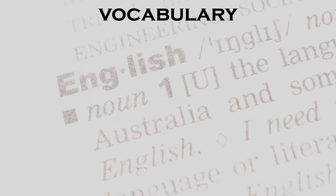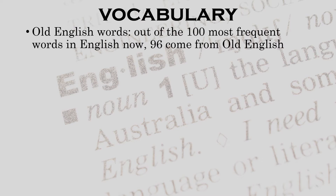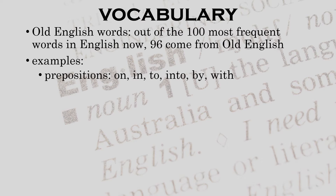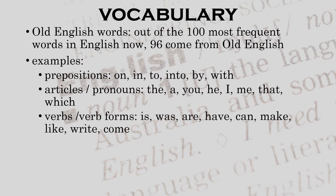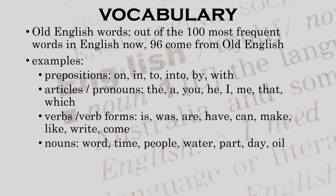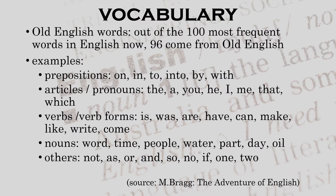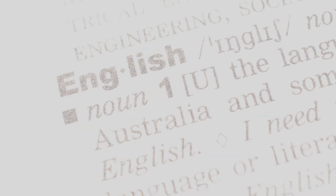When we look at vocabulary, Old English is certainly still important in present-day English. Looking at the 100 most frequently used words in contemporary English, 96 come straight from Old English. For instance, we have a number of prepositions such as 'with', 'on', 'in', 'to', 'into', 'by'; some articles or pronouns: 'the', 'you', 'he', 'I', 'me', 'that', 'which'; some verbs or verb forms such as 'is', 'was', 'are', 'have', 'can'; ordinary nouns like 'word', 'time', 'people', 'water', 'part', 'day'; and also words like 'not', 'as', 'or', 'and', 'so', 'no', 'if', 'one'.